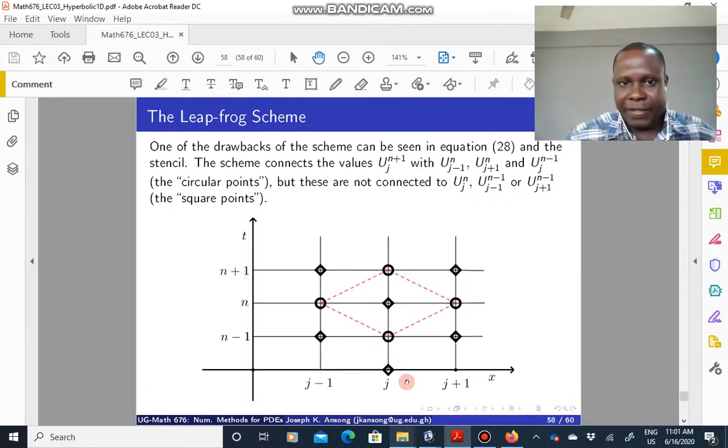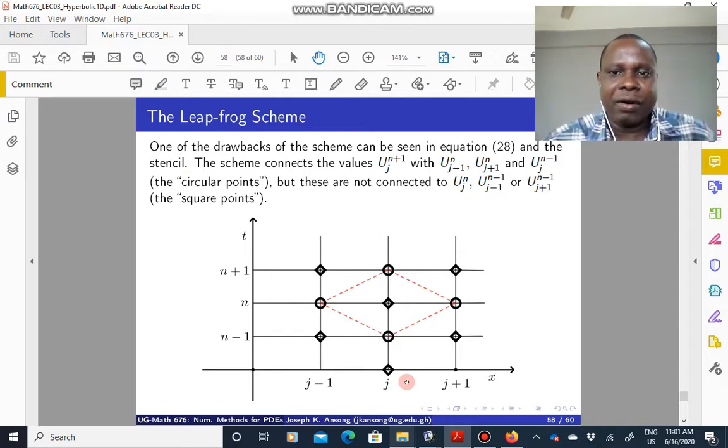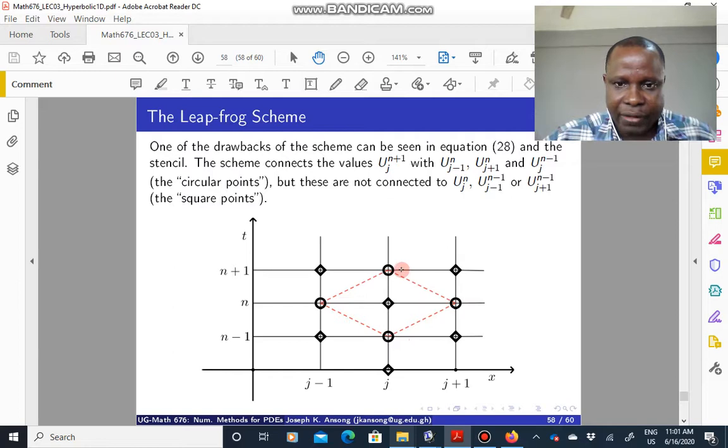Now you see one disadvantage, we've already mentioned one disadvantage is that, I mean, to start the scheme you need another scheme to basically help you to start off. That is one thing. But you also see that the scheme connects these circular points on the grid.